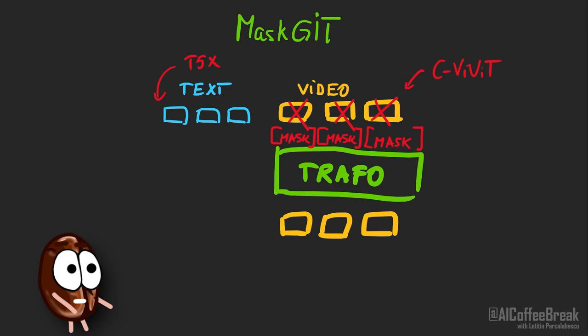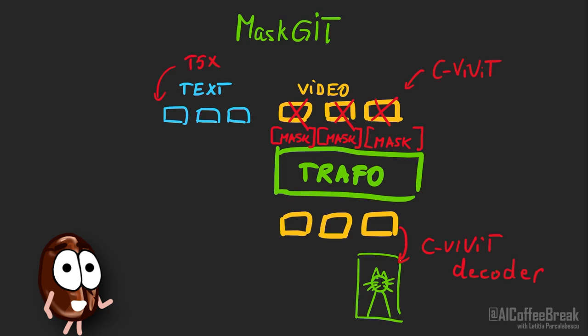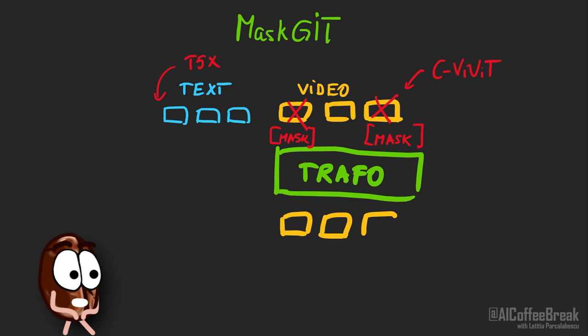Are we done? No — since each mask token is predicted in parallel, it doesn't depend on the predictions of other mask tokens, so we have an output that is likely incoherent. So the authors discard some of the predictions, mask a large fraction of them, and let the model predict them again.